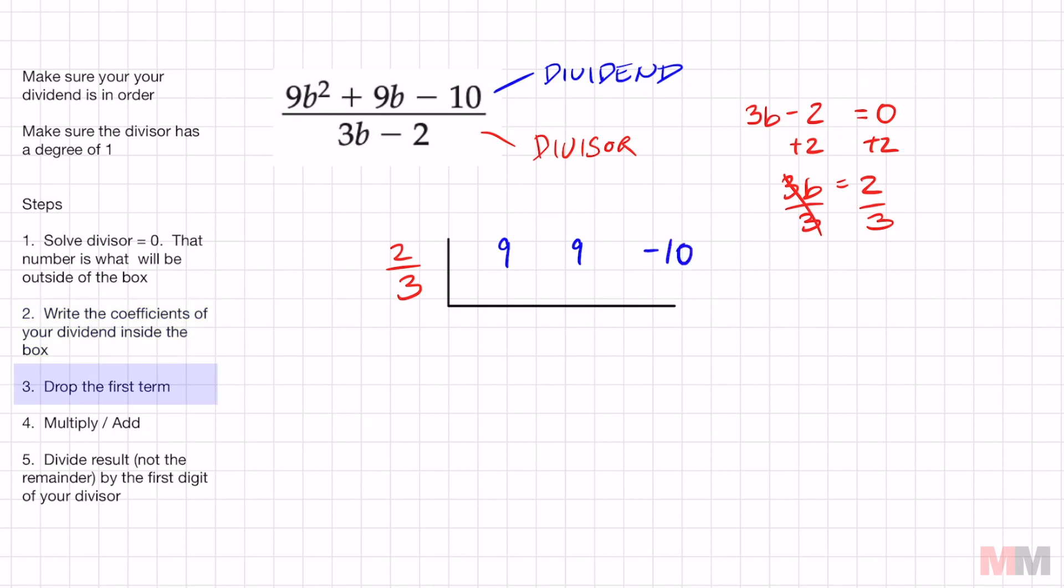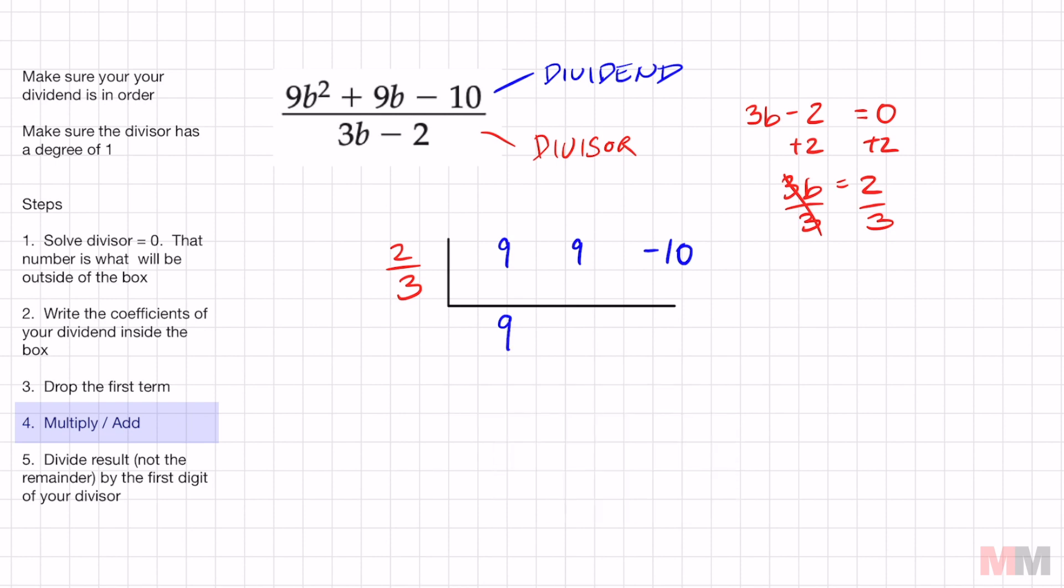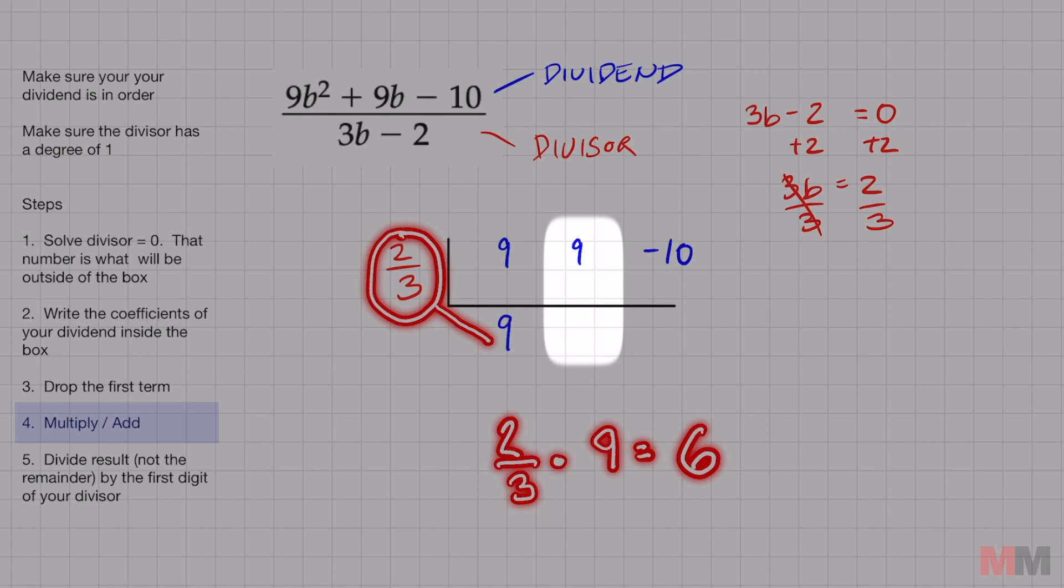Number three. So it's not too bad right now. Actually, it's not even bad at all. Number three, drop the first term. So my first term is 9. I'm going to drop that right below right here. This is where that repetitive multiply and add starts. You're going to take your divisor, two-thirds, and you're going to multiply it to 9. So two-thirds times 9, that equals 6. 6, you're going to write right below this 9 right here. We're going to write a 6 right there.